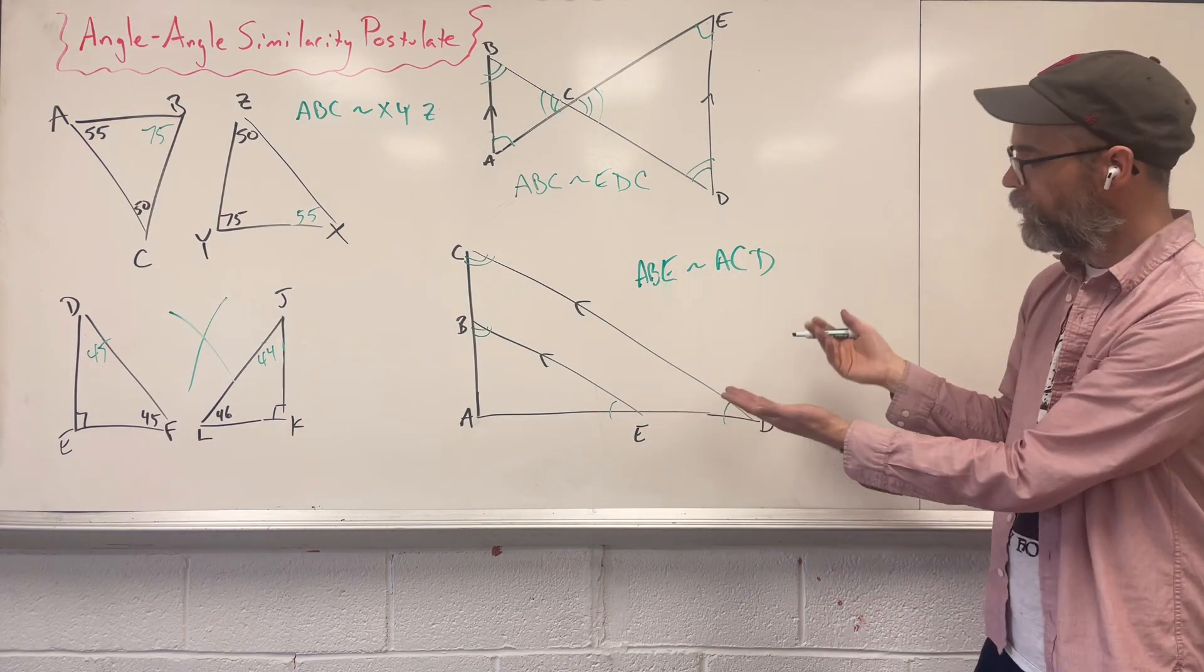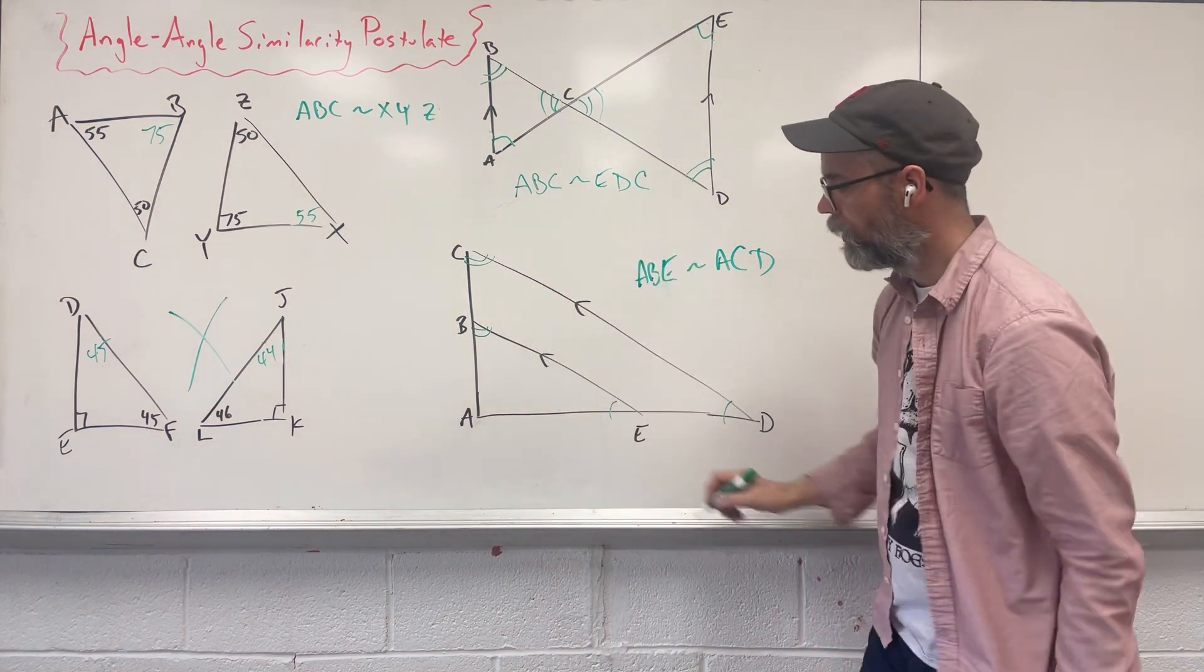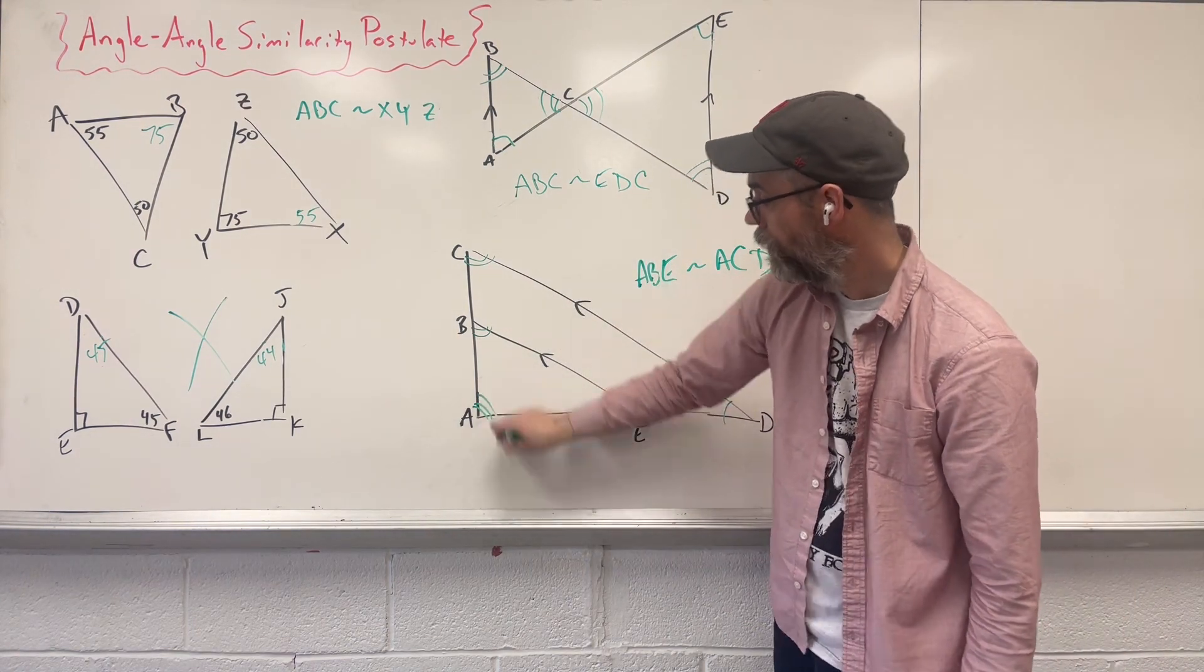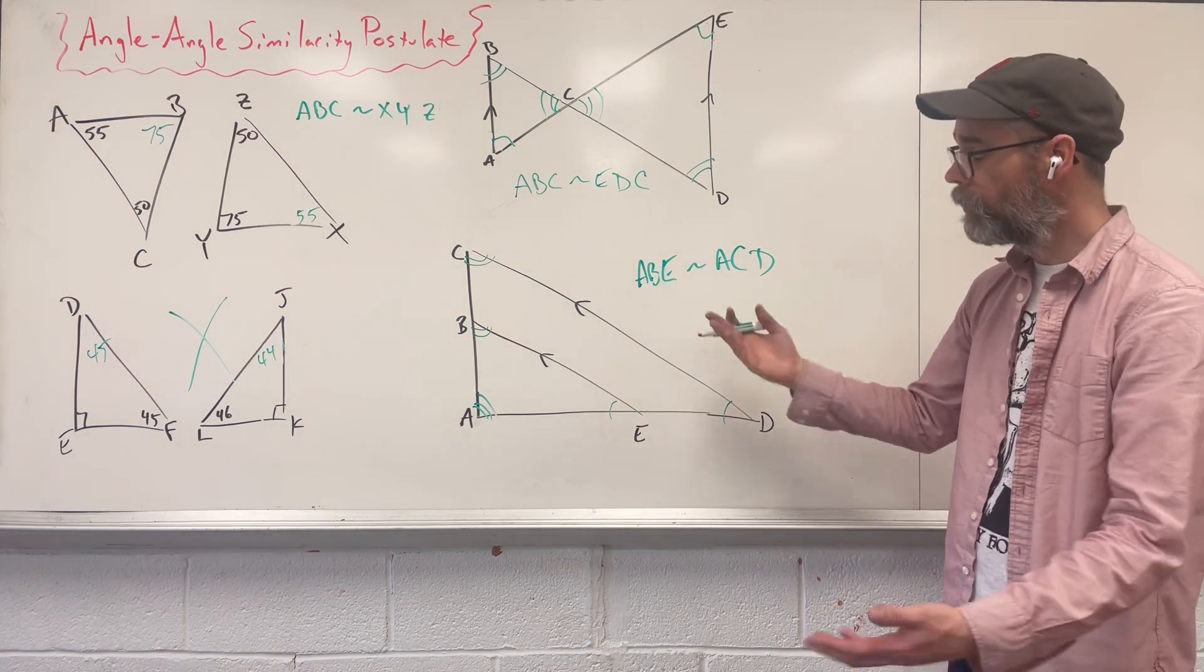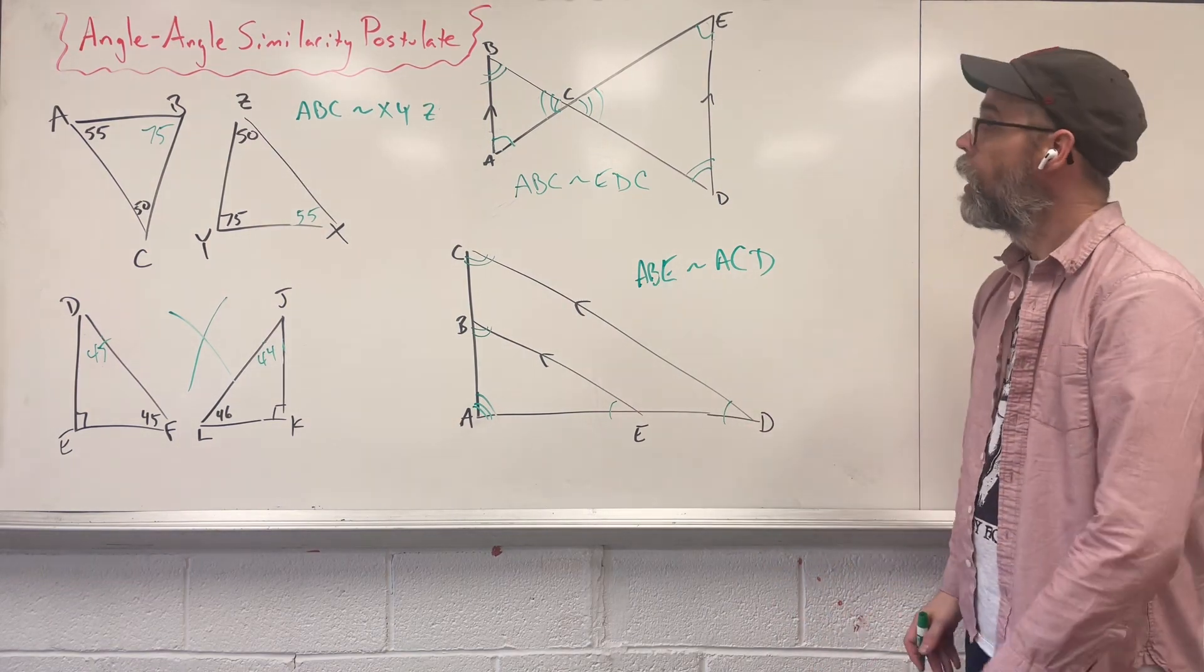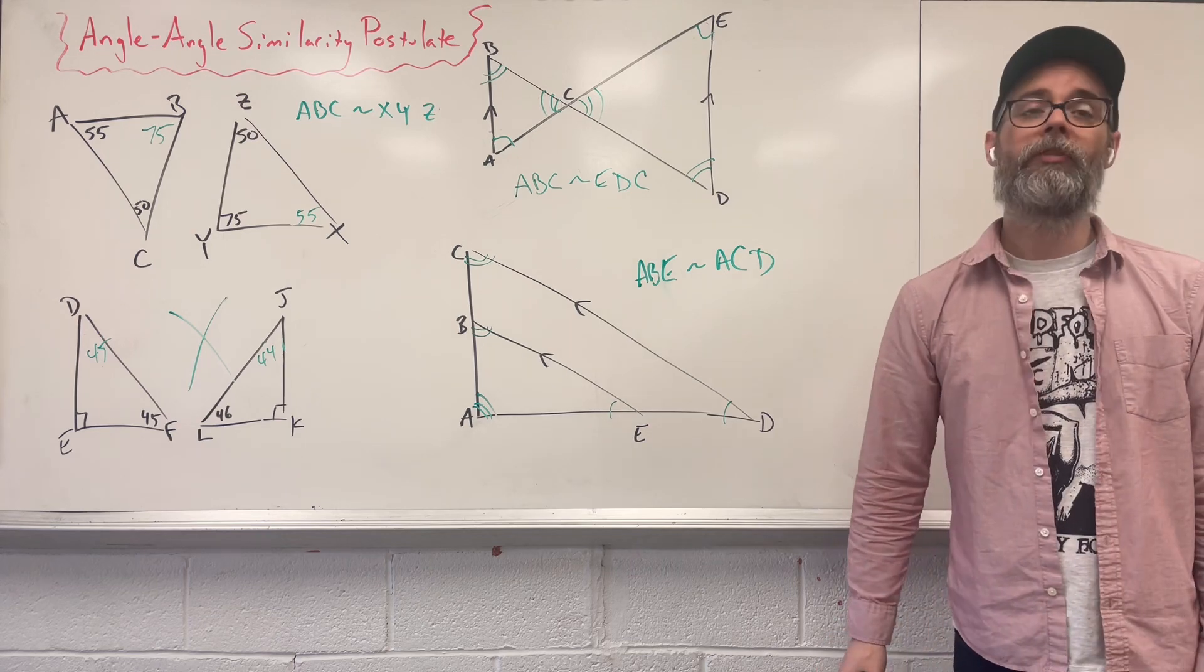And we know that because we share two, they're similar, but also both those triangles share that last corner down there. So it also means that they have to be similar. And that's using the angle-angle similarity postulate.